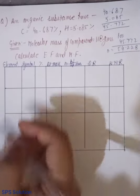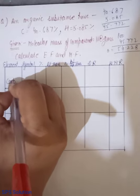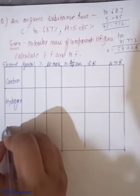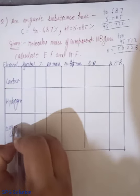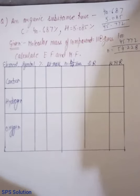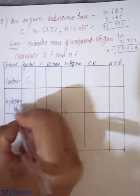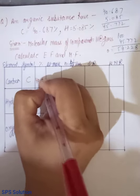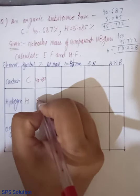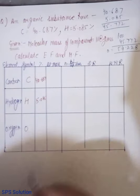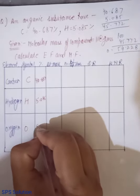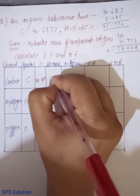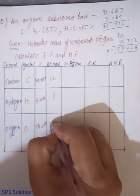So now I am going to start the question. Our first element is carbon, second element is hydrogen and third element is oxygen. That is not given in the question, but I have to suppose it. Okay, symbol carbon, hydrogen, oxygen. Now, percentage if I write 40.687%, hydrogen is 5.085% and oxygen is, maine calculate kiya yahan pe, 54.228%. Okay, atomic mass of carbon is 12, hydrogen is 1, oxygen is 16.